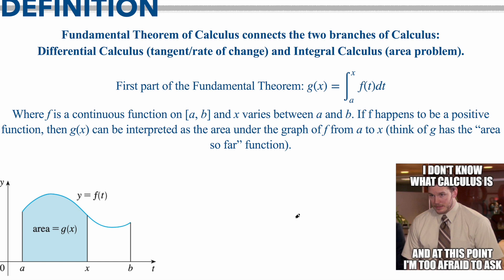The first part of the fundamental theorem states that if you have g of x, it is going to be equal to the integral from a to x of some function f(t) dt. If f is a continuous function from a to b, x varies somewhere between those two values. If f happens to be a positive function, then g can be interpreted as the area under the curve from a towards x — the area accumulated so far.